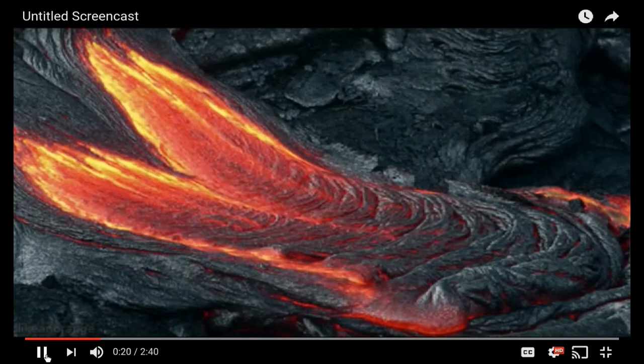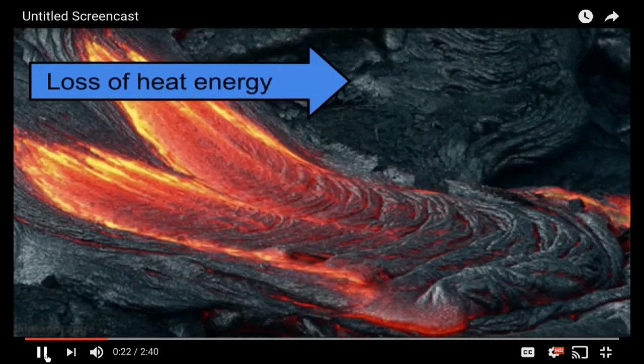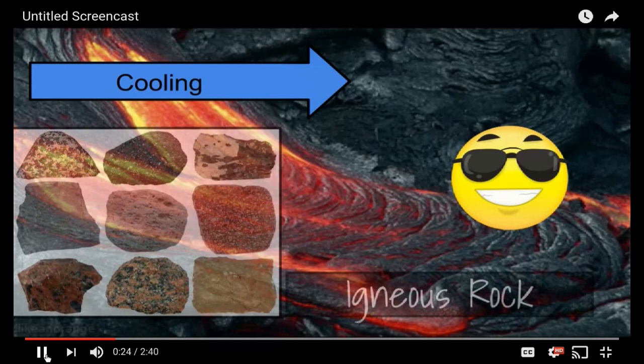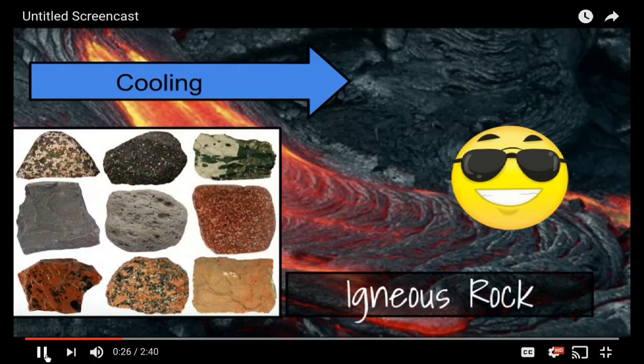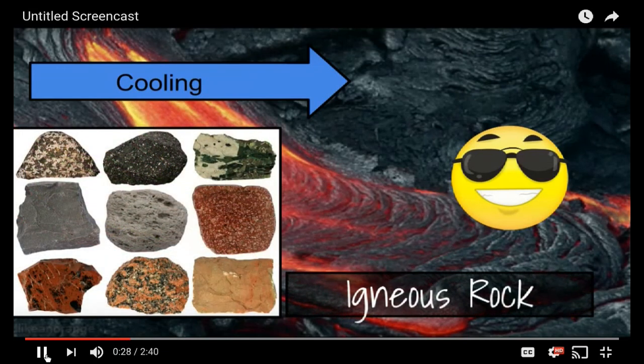This cooling process will turn the lava into a different kind of rock known as igneous rock through the loss of heat energy. It's the only kind of rock formed through the loss of heat energy.